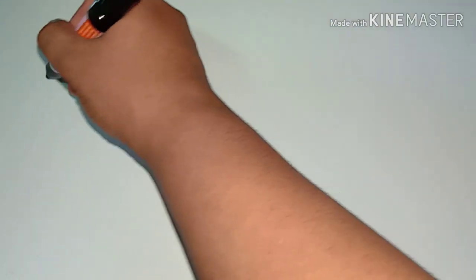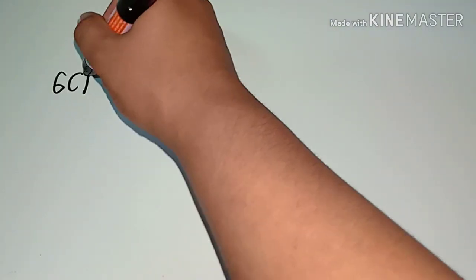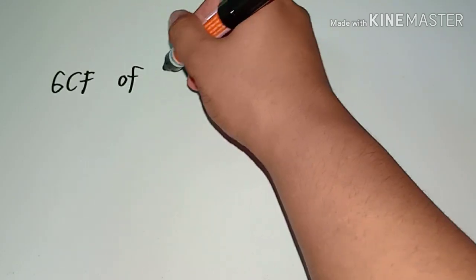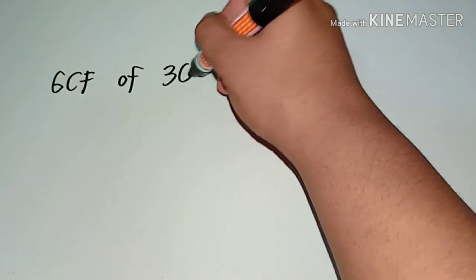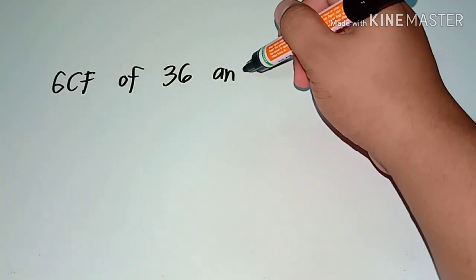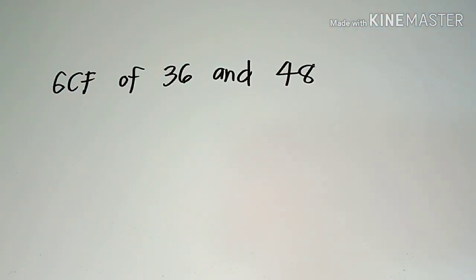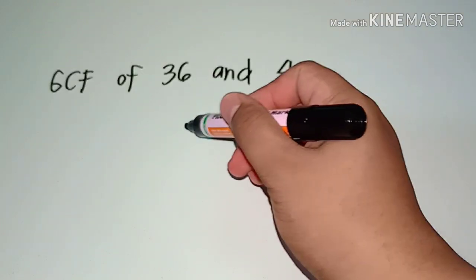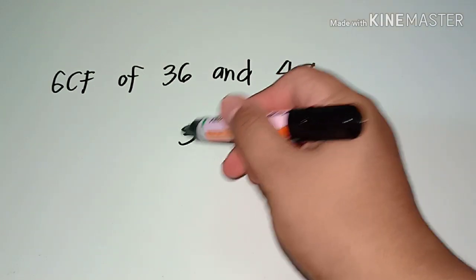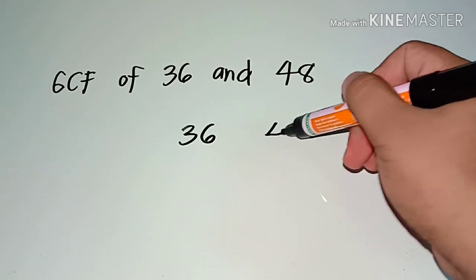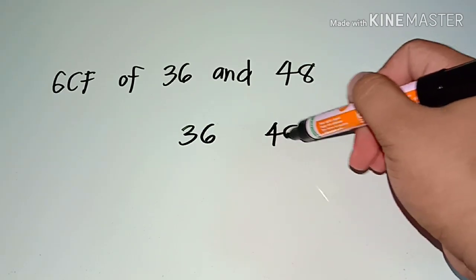Another example: what if we're looking for the GCF of 36 and 48? This time, I'll be using the ladder method. In the ladder method, you make use of division because we will just divide by a common number. So we will write down 36 and 48 here.